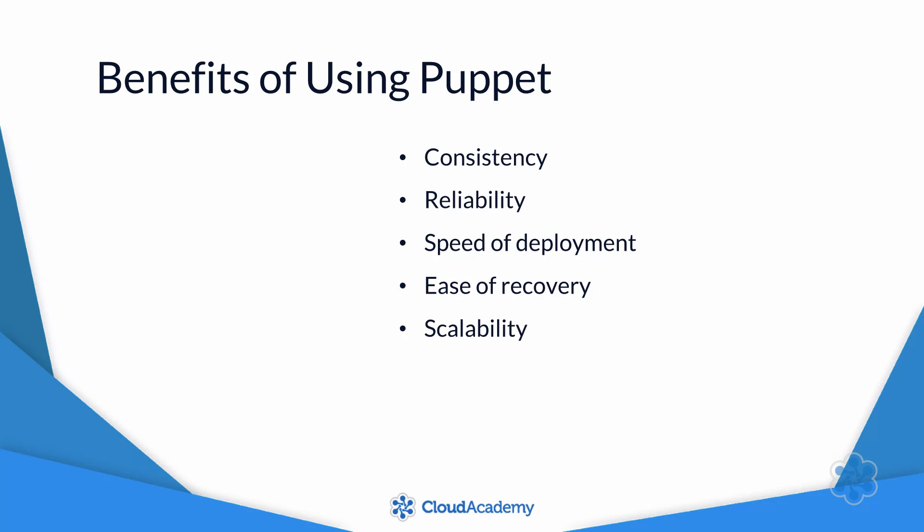Fifth, an automated infrastructure is scalable. Adding more servers is a breeze when Puppet already knows how to configure them. And finally, it frees you from the drudgery of repetitive tasks, so you can focus on more productive work.